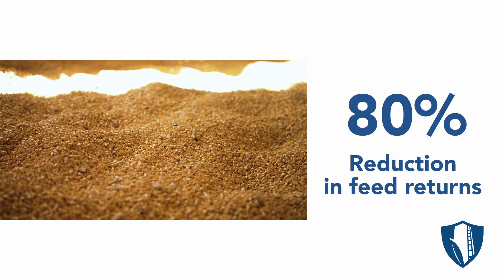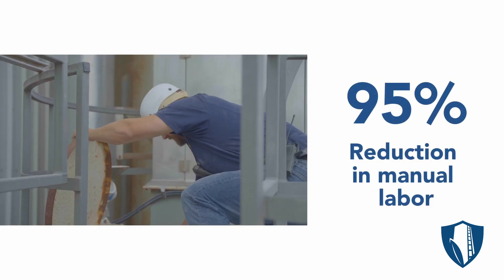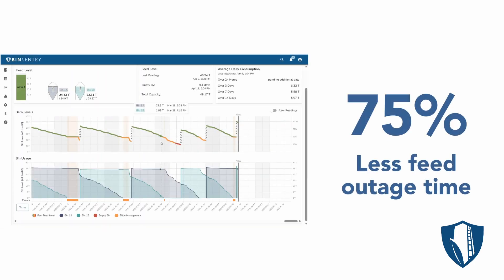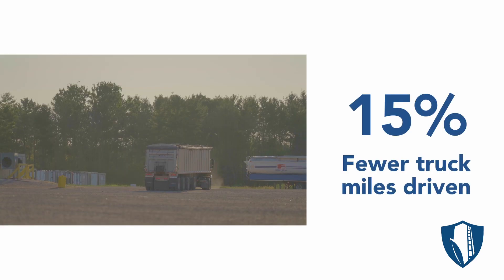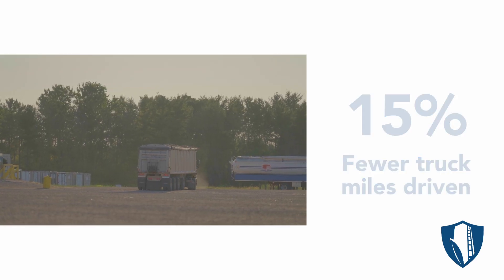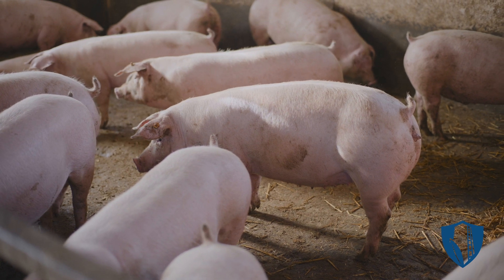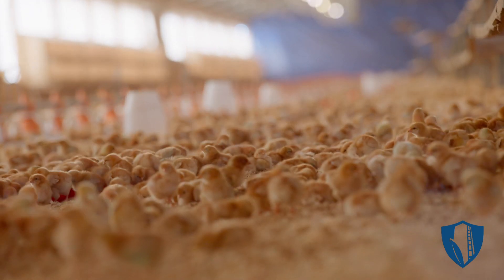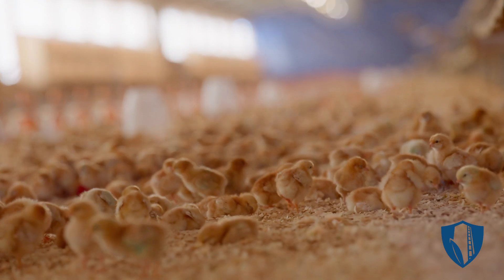By improving feed management, you can realize massive cost savings and efficiency gains — such as an 80% reduction in feed returns, a 95% reduction in manual labor in bin climbs, 75% less feed outage time, and 15% fewer truck miles driven. Feed is your single biggest expense, so start treating it that way with Bin Sentry.